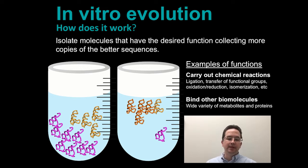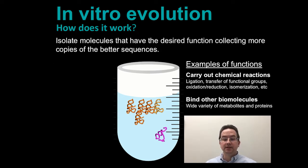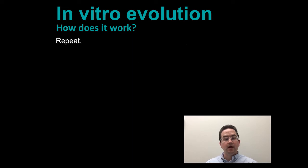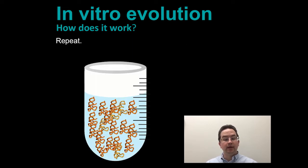With better being determined by whatever function you're trying to evolve. For example, being better could mean the sequence is faster at carrying out a chemical reaction. In the next step, we once again use enzymes to make multiple copies of the isolated functional sequences. We can continue to repeat all of these steps several times until we end up with a population of molecules that is really good at accomplishing the function we decided to select for.